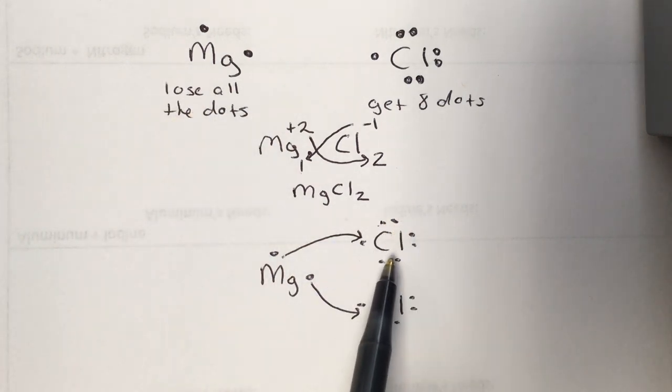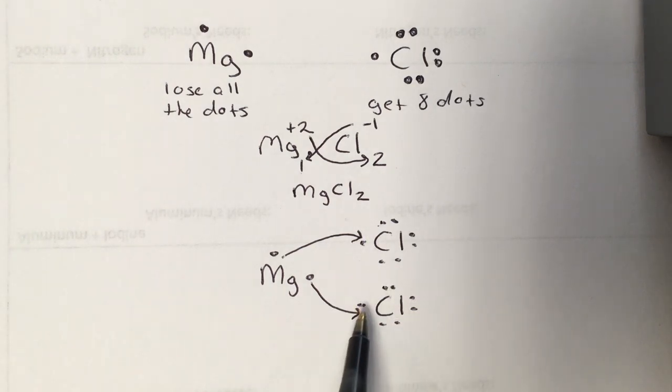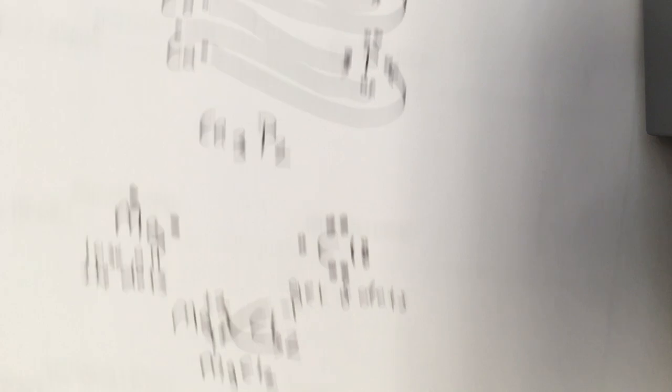And one, two, three, four, five, six, seven, and the new one would be eight. One, two, three, four, five, six, seven, and the new one would be eight. Everything's got eight electrons, so it's good. So you can either go from the drawing to the formula, or use your crisscross method to go from the formula to the drawing.